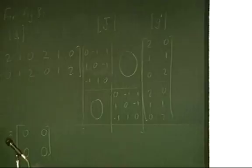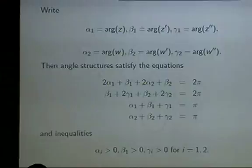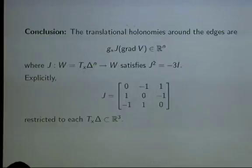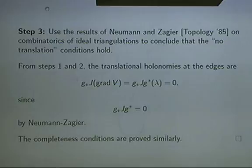And that's what you get in general from these Neumann and Zagier combinations. You might also like to write down the volume function explicitly in this case and see how these other equations that I wrote down work out.